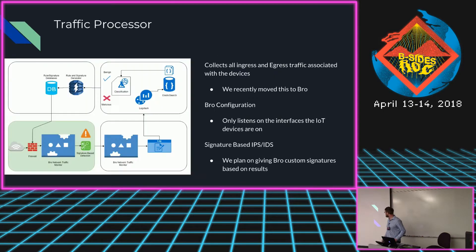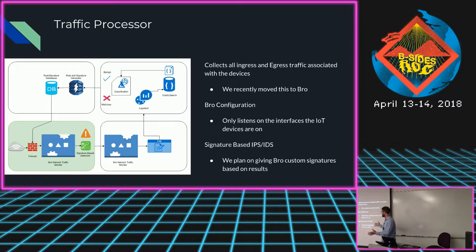Now we're going to look at the individual components in a lot more depth. At the front we have the traffic processor, which is the brain for the entire operation - it collects all ingress and egress traffic associated with the devices. We originally wrote this in Python, collecting individual features from the packets themselves. But when we wanted to collect more complex features, like how much congestion is on the network when a specific packet is received, that got harder. A friend suggested using Bro, so we scrapped all of our code and replaced it with Bro. Later on, we plan on implementing a signature-based IPS-IDS system - we'll generate signatures on our machine learning infrastructure and forward them down to the firewall.